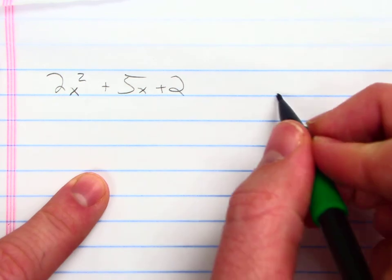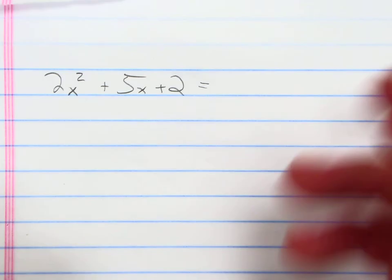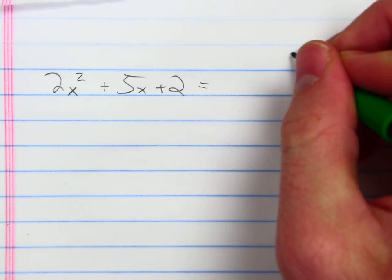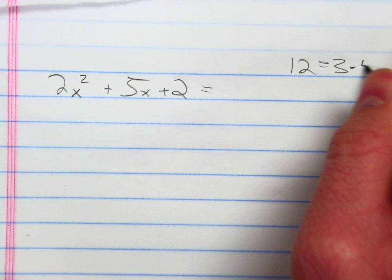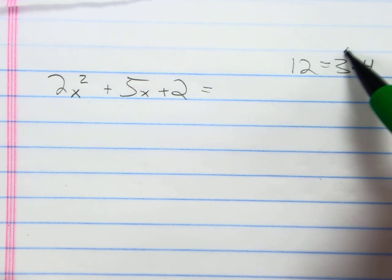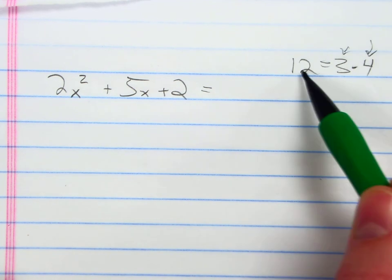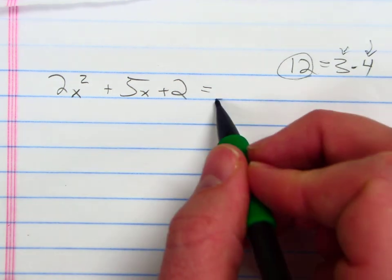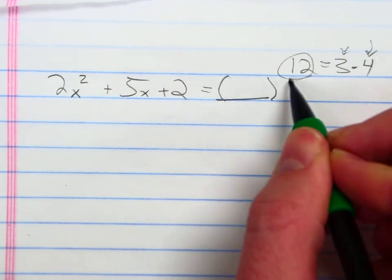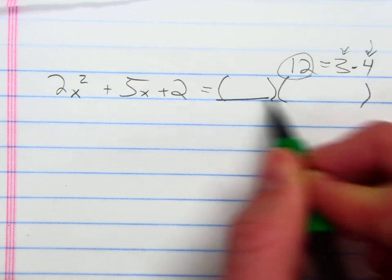And once again, whenever I factor something, like if I factor the number 12, I'll be saying okay, what are two numbers that I multiply to get 12? So those are the factors and that's the product. So this polynomial is my product. I want to find out what two binomials do I multiply together to get 2x squared plus 5x plus 2.